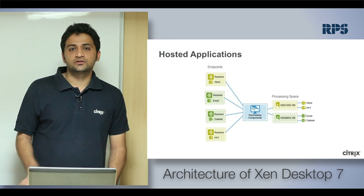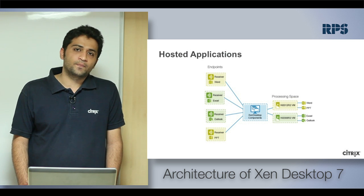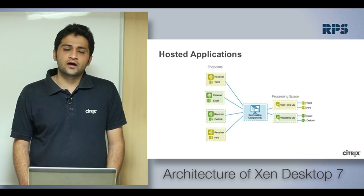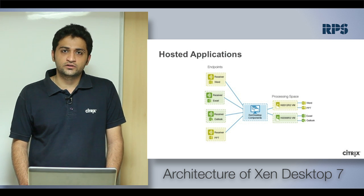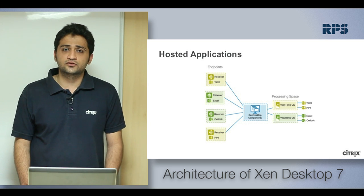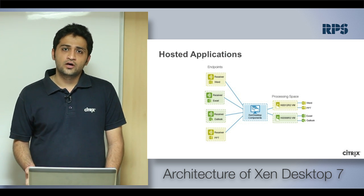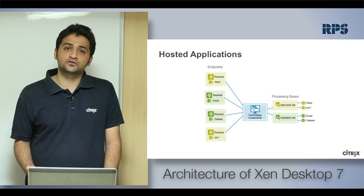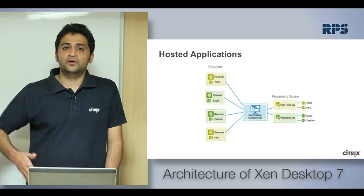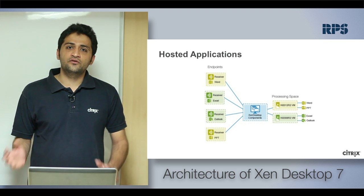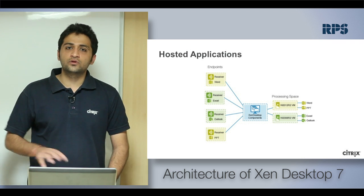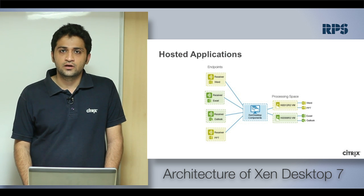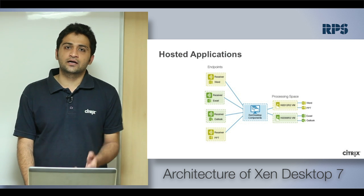In previous versions, Citrix used to have a XenApp and a XenDesktop. From 7.0 onwards they introduced a unified architecture which can do applications as well as desktops using a single console. As an administrator, we don't have to manage two separate consoles — one for XenDesktop and one for XenApp. It's a unified architecture covering both desktop virtualization and application virtualization from the same console.